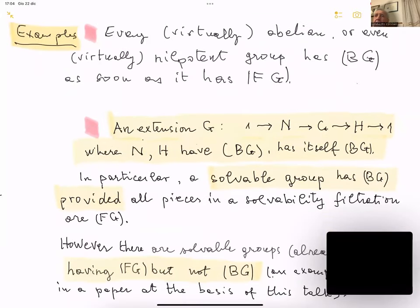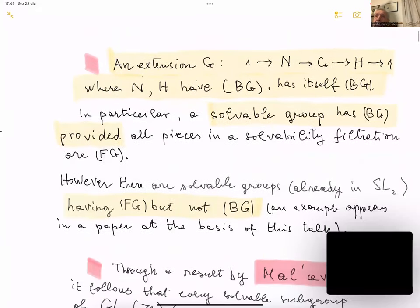Every virtually abelian or virtually nilpotent group has bounded generation if and only if it is finitely generated. Here 'virtually' means having a subgroup with the given property and of finite index. Here is a criterion to construct new examples: if we have an extension of groups — an exact sequence of H by N — and both N and H have bounded generation, then the same holds for G, but generally not the converse.